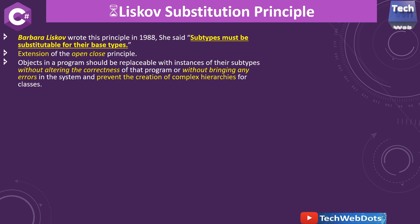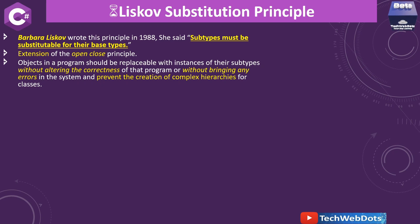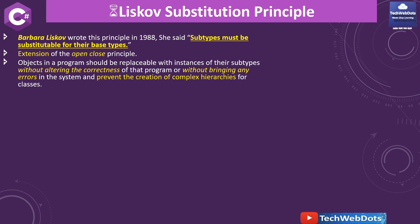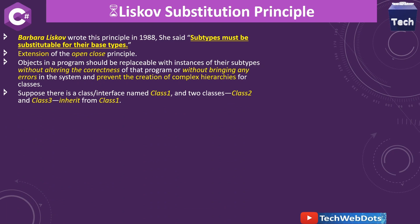This means we are not making any errors or behavioral changes. Without altering the correctness of the program and without bringing any errors — either compile-time or runtime — and we should prevent the creation of complex class hierarchies. This is a very important point from a maintainability and long-term vision perspective.